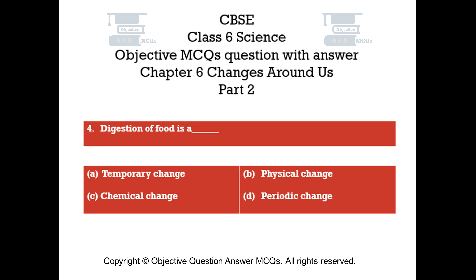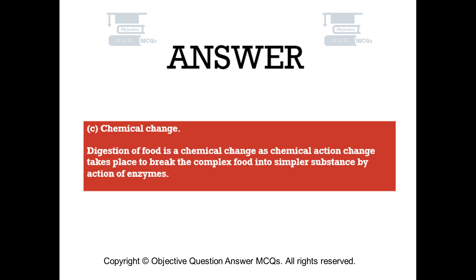Question number 4. Digestion of food is a — Option A: temporary change. Option B: physical change. Option C: chemical change. Option D: periodic change. The right answer is Option C: chemical change. Digestion of food is a chemical change, as chemical action takes place to break the complex food into simpler substances by the action of enzymes.